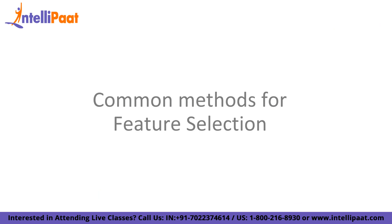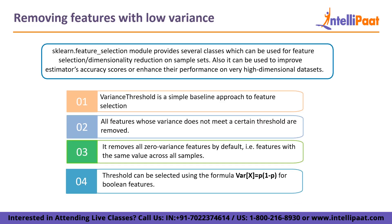Now we'll look at common methods for feature selection. First is removing features with low variance. The sklearn.feature_selection module provides several classes which can be used for feature selection or dimensionality reduction on sample sets, and it can be used to improve estimator accuracy scores on high dimensional datasets. Variance threshold is a simple baseline approach to feature selection — all features whose variance does not meet a certain threshold are removed. It removes all zero-variance features by default, i.e., features with the same value across all samples. A threshold can be selected using the formula given for Boolean features.